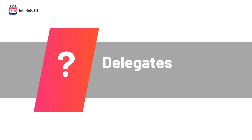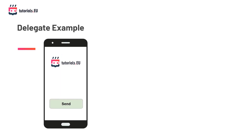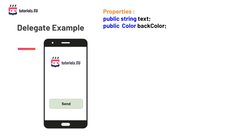So what is a delegate? In simple terms, a delegate is a type that can hold a reference to a method, and when you call the delegate, the method referenced will get called. Imagine we are developing a UI library that other developers can use to build mobile apps, and one of the UI elements is a button. The button class has properties like a string called text, a color called back color, and two ints called size W and size H for width and height. What is missing is a method containing the code to execute once the button is clicked.